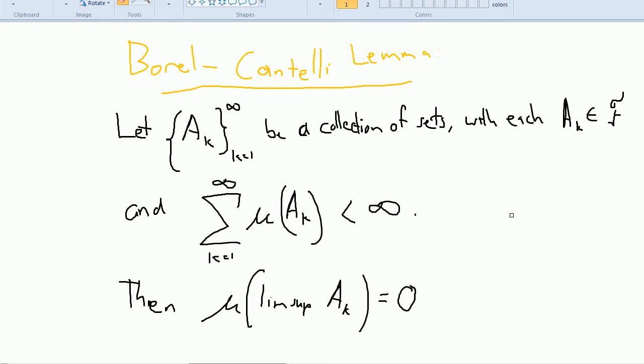Hello, I'd like to talk about the Borel-Cantelli Lemma and hopefully give a proof of this lemma. So the lemma says that if we have a collection of sets, each of the sets is measurable, otherwise you can't say much about them, and if their sum, the sum of all their measures is finite, then their lim sup must have a measure of zero.